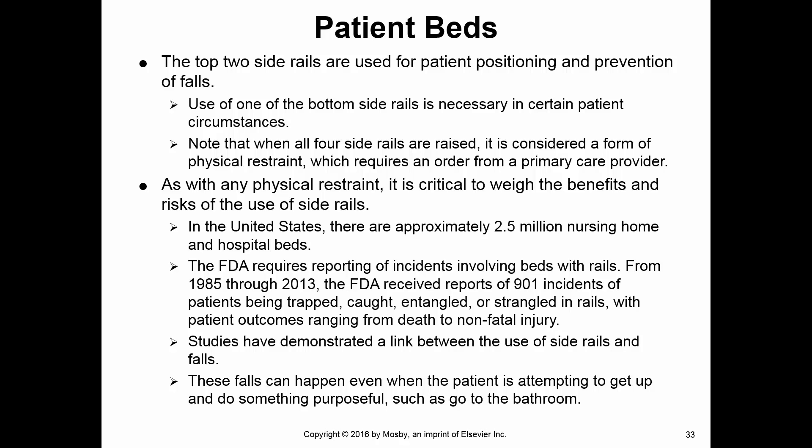Regarding patient beds: two rails up are not considered a restraint — they're for positioning and fall prevention, or to remind the patient to call for help when getting up. But if we put up all four side rails, that is considered a form of restraint and must be specifically ordered. A confused, ambulatory patient will climb over four rails and fall, so don't rely on that to keep them in bed.